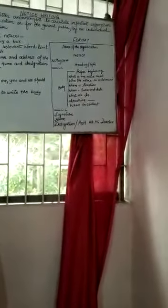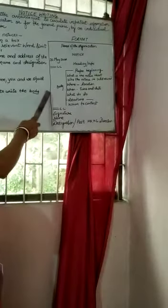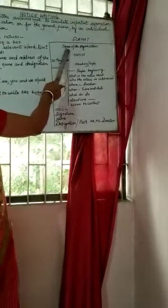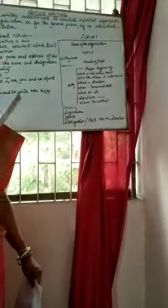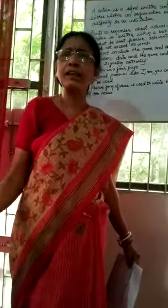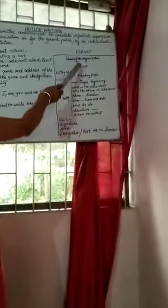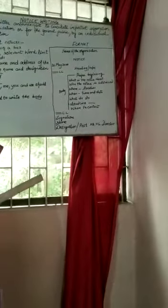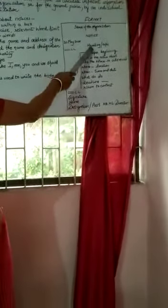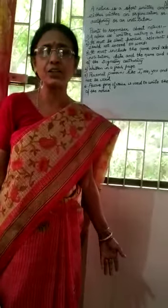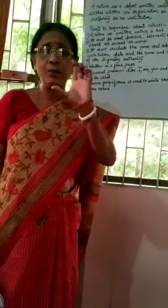Now I am going to tell you about the format of the notice. First, you make a rectangular box. At the top you write the name of the organization or institution giving the notice — it can be the name of your school, Rotary Club or any other institute. Then just below that, in capital letters, you write NOTICE. On the left-hand side you write the date in expanded form, and then the heading or topic, such as debate competition, cultural program, or annual day function.